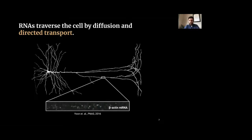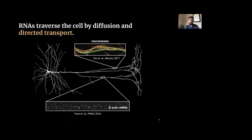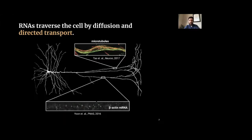Directed transport takes advantage of microtubules — tubule-shaped proteins that run along neuronal projections. Microtubules not only support the structure of the neuron but also act as railroad tracks for molecules to move from one end to the other. The RNAs being trafficked by molecular motors along these microtubules move at a well-defined speed, which is how neurons accomplish RNA localization in a timely manner.